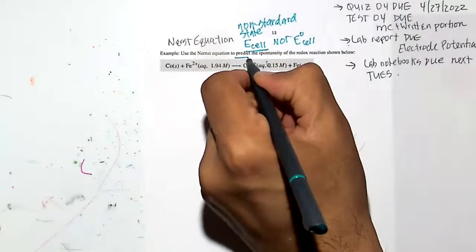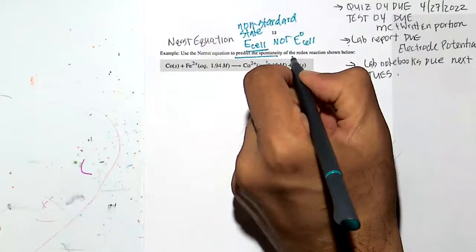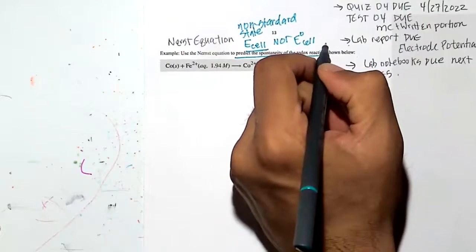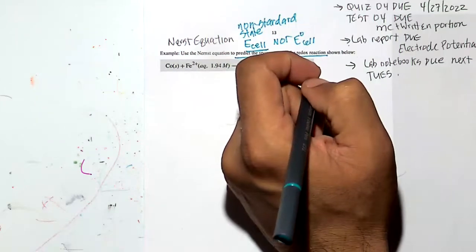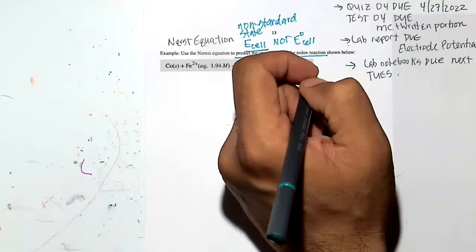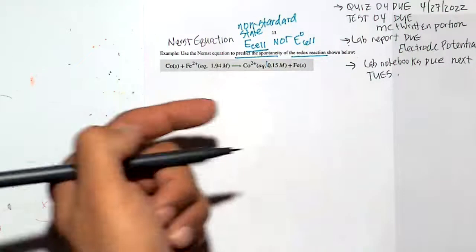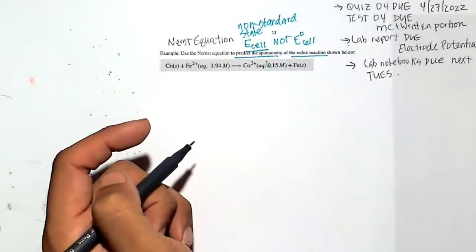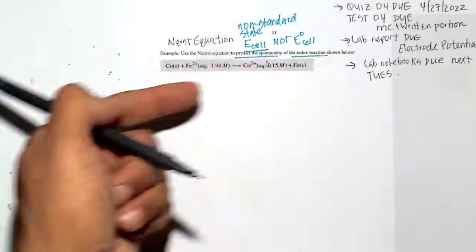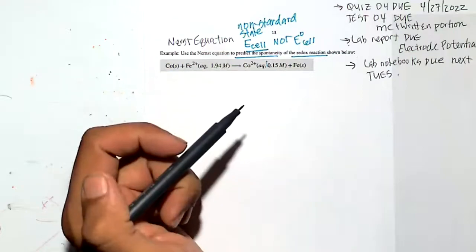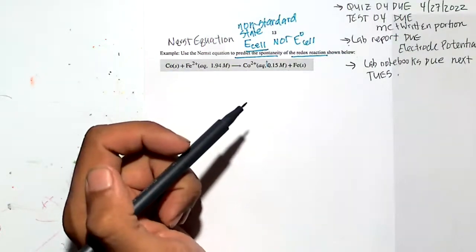Calculate using the Nernst equation to predict the spontaneity of this redox reaction. We're looking for positive voltage — positive voltage means it's spontaneous. We're making a battery, and if the battery has positive voltage, that means the reaction is moving forward. If it's a negative voltage, the battery is a dead battery and the reaction is not moving forward — it's staying on the reactant side.